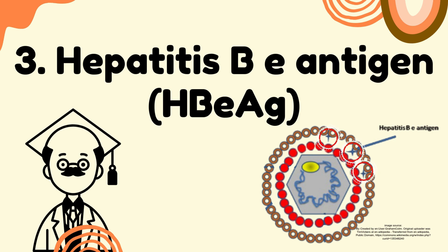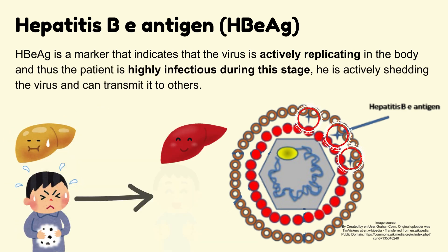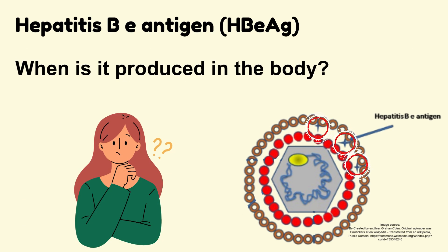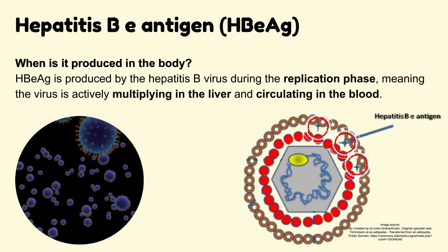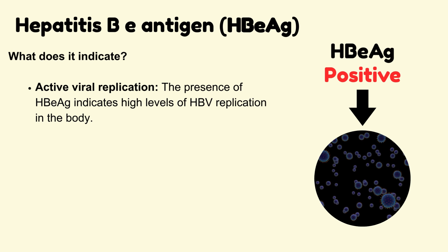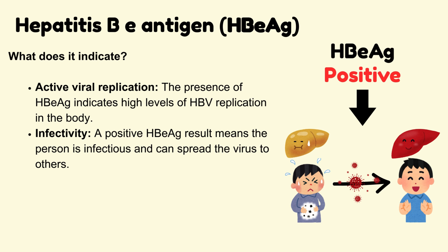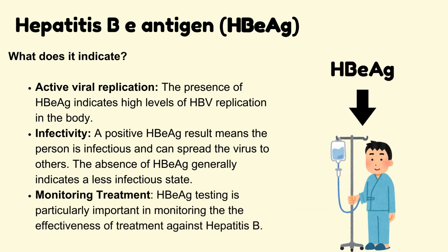Number 3: Hepatitis B E antigen, HBeAg. HBeAg is a marker that indicates the virus is actively replicating in the body, and thus the patient is highly infectious — actively shedding the virus and able to transmit it to others. HBeAg is produced by the hepatitis B virus during the replication phase, meaning the virus is actively multiplying in the liver and circulating in the blood. Its presence indicates high levels of HBV replication. A positive HBeAg result means the person is infectious, while its absence generally indicates a less infectious state. HBeAg testing is particularly important in monitoring the effectiveness of treatment against hepatitis B.